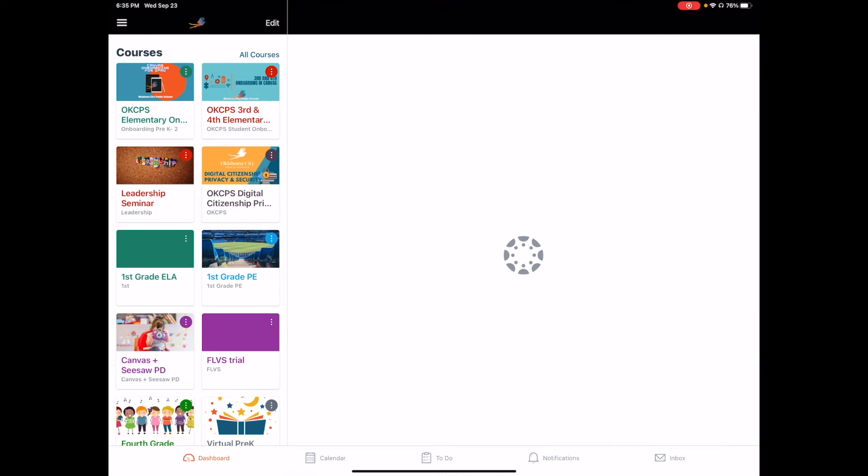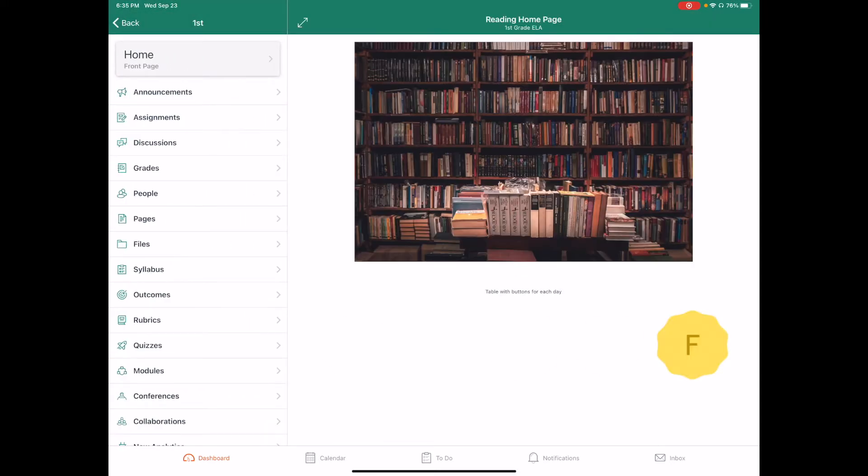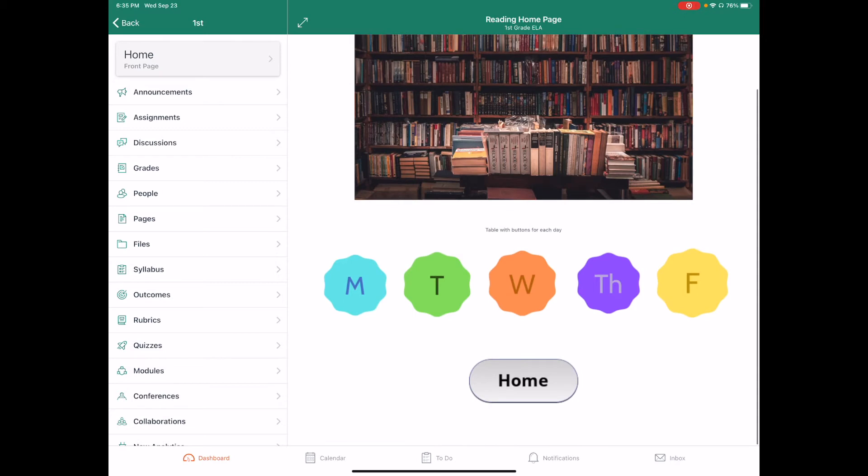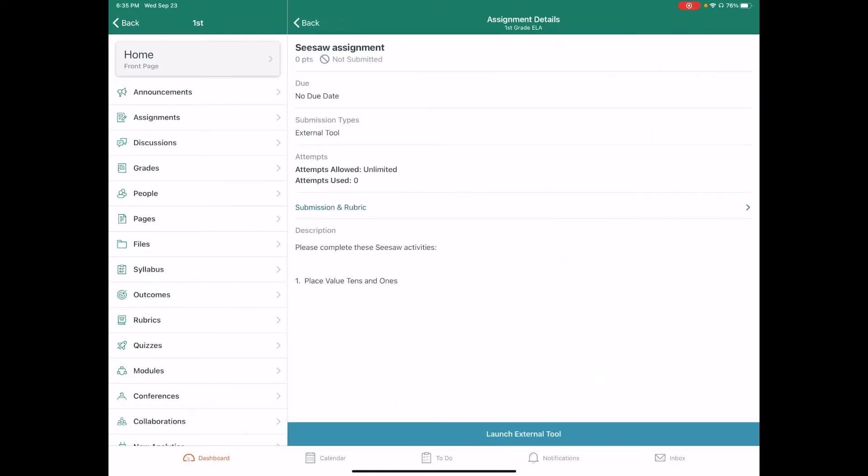You're going to go into the particular course where you have an assignment. I know that I have a Seesaw assignment in first grade ELA, and I am going to access my assignment. For this particular assignment, my Monday button, when I press my Monday button, takes me to my Seesaw assignment details.